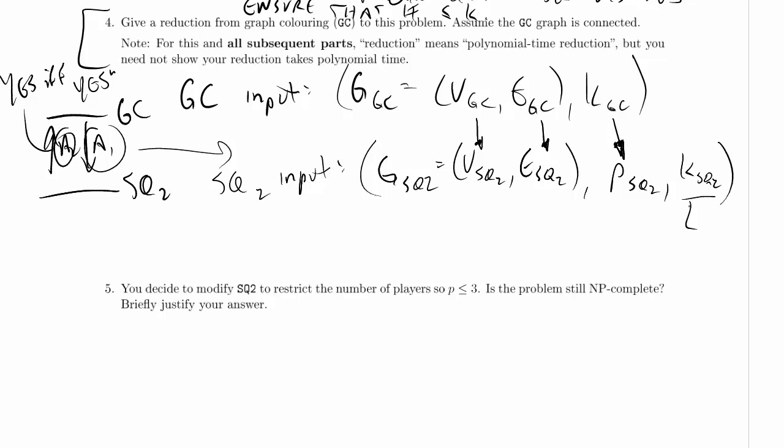So what do we do with k_SQ2? What should that be equal to in order to ensure the constraint in GC that two neighboring nodes cannot have the same color? That's pretty easy, actually. We just set that to 1. If we set this to 1, then we're saying you can't have an initial connected star system larger than size 1. This ought to do it. This ought to be a reduction that works.